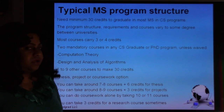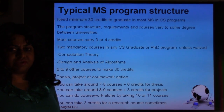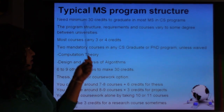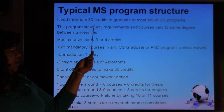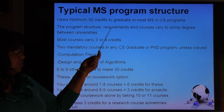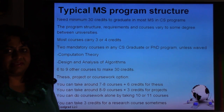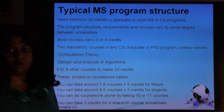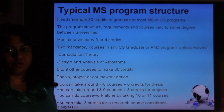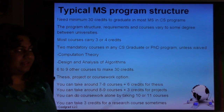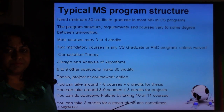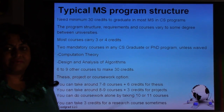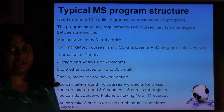The typical MS in Computer Science program structure: most universities in the United States require about 30 credits to graduate. Assuming most courses give you three credits, that's about 10 courses. So if you take 10 courses at a graduate level and get at least a B grade in each course, you can probably graduate.